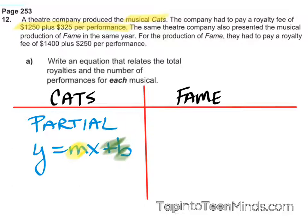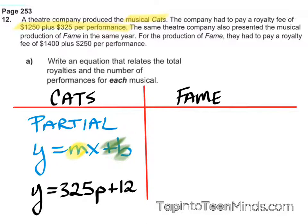So how about an equation? I know Hannah wanted to do it. Hannah, what do you think? Y equals 325P plus 1250. Nice. Quick explanation for us — why 325 here, Hannah? Because that's per performance. Awesome. And P, I'm assuming, is per performance. Nicely done.